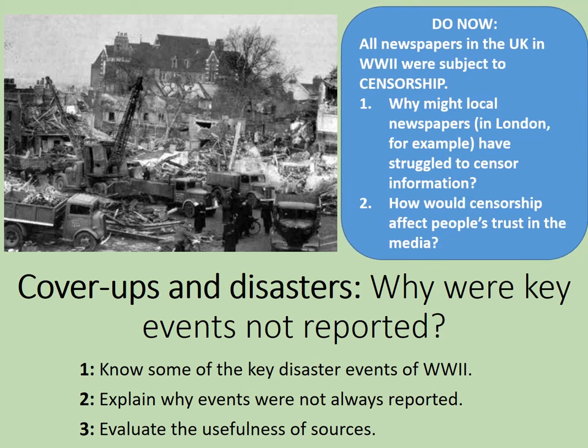As a do-now task: all newspapers in the UK in World War II were subject to censorship. This meant that the government could control, to a certain extent, what newspapers reported on. Firstly, why might local newspapers — in London, for example — have struggled to censor this information? And secondly, how would censorship affect people's trust in the media?